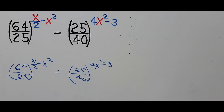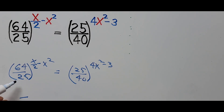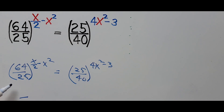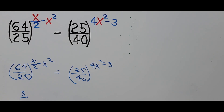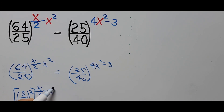On the left side of the equation, 64 over 25 can be rewritten since 64 is a perfect square and 25 is a perfect square. The square root of 64 is 8, since 8 times 8 is 64. And 25 is a perfect square — that's 5. So 64 over 25 becomes 8 over 5, squared, then raised to the power x over 2 minus x squared.